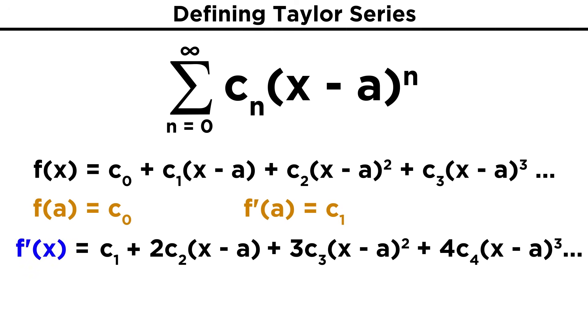Let's go back to the expression for the first derivative and take the derivative again. c one goes away, and this term becomes two c two. Then we have two times three, or six c three, times the quantity x minus a. This next coefficient becomes twelve, and so forth. Again, plugging in a for x will isolate the two c two term, so f double prime of a equals two c two, or c two equals f double prime of a over two.